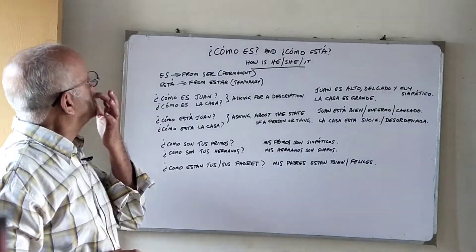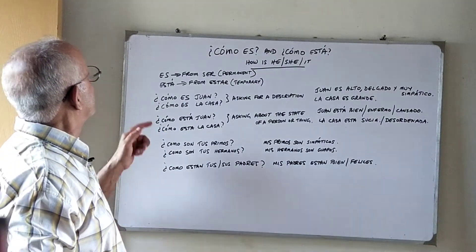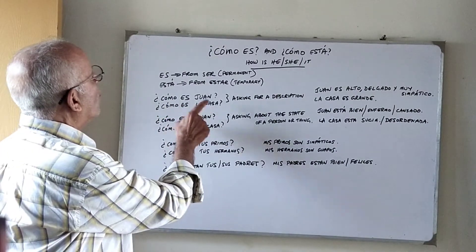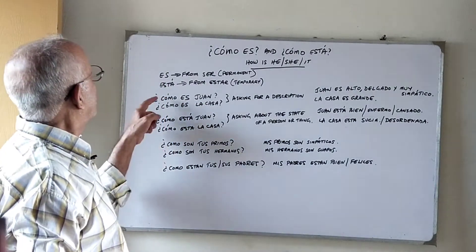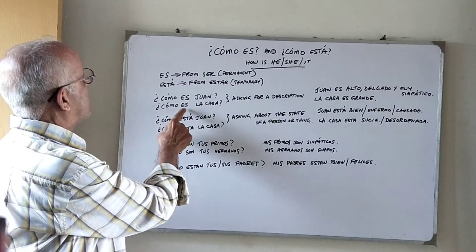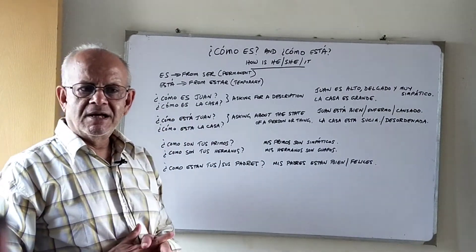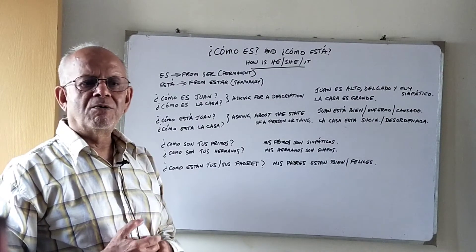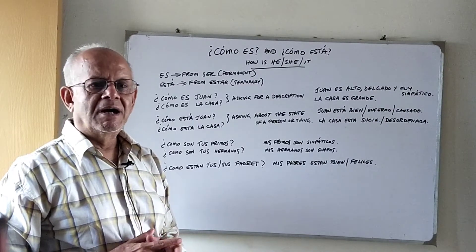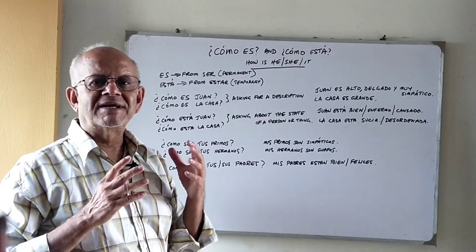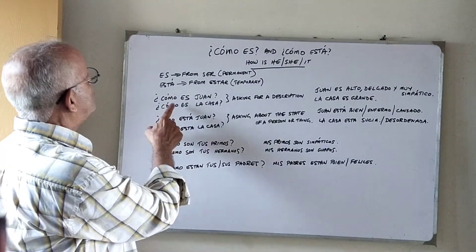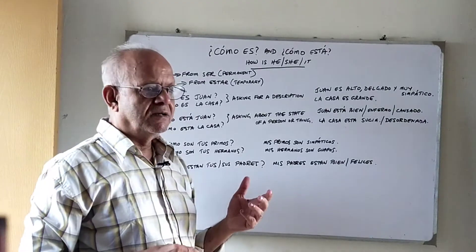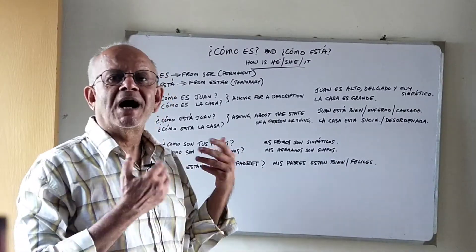Now let's look at some examples. Cómo es Juan? and Cómo es la casa? Here we are using the verb Ser, which we use when asking about permanent situations or characteristics. So these two questions mean 'What is Juan like?' and 'What is the house like?'